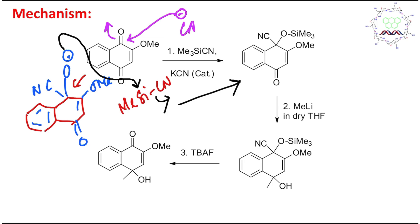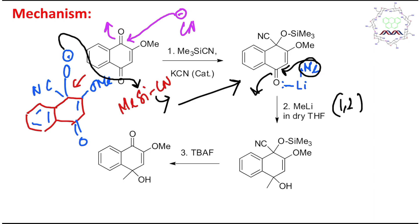In the second step, the reagent is methyllithium in dry THF. Methyllithium is a very strong reagent and it prefers to do a nucleophilic 1,2-addition. For example, it reacts with an ester and directly transfers the methyl group — it coordinates through lithium, and the methyl group is transferred directly to the carbonyl carbon and opens it up. After workup, one side is methyl and the other is OH, so the vinylogous ester results in an allylic alcohol.